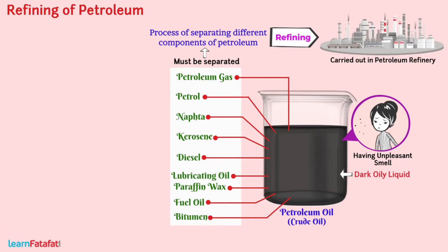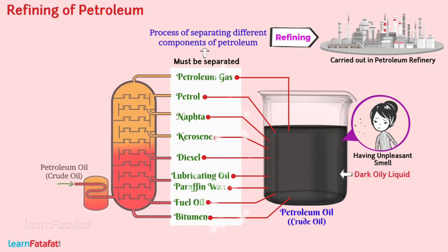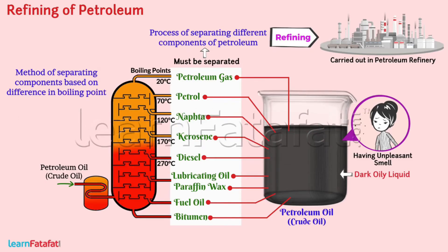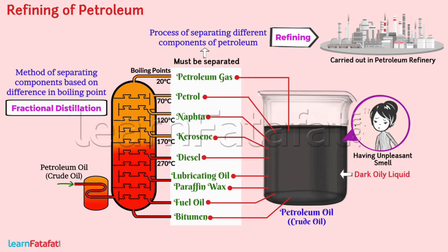The principle used for separation is that different components have different boiling points. The method of separating components based on difference in boiling point is called fractional distillation.